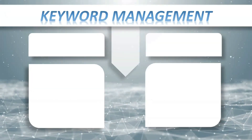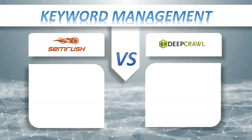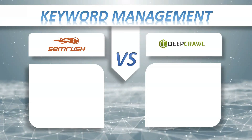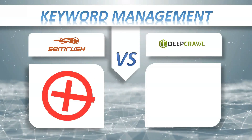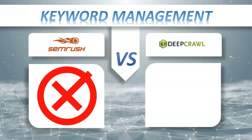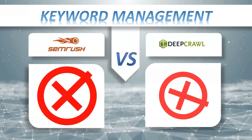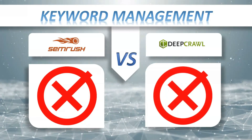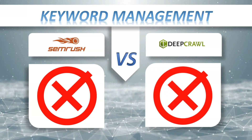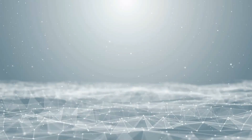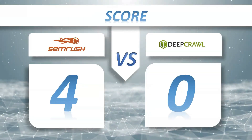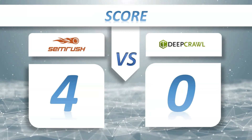Keyword management: SEMrush minus, DeepCrawl minus — both tied on this one. So let's see the score: SEMrush 4, DeepCrawl 0.